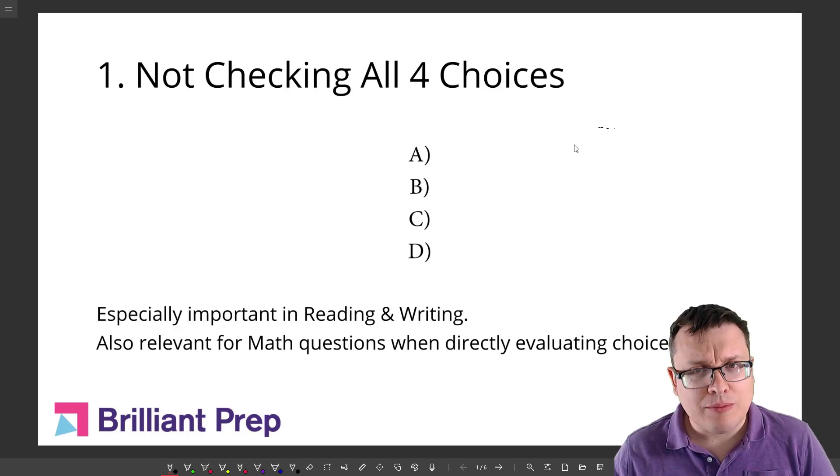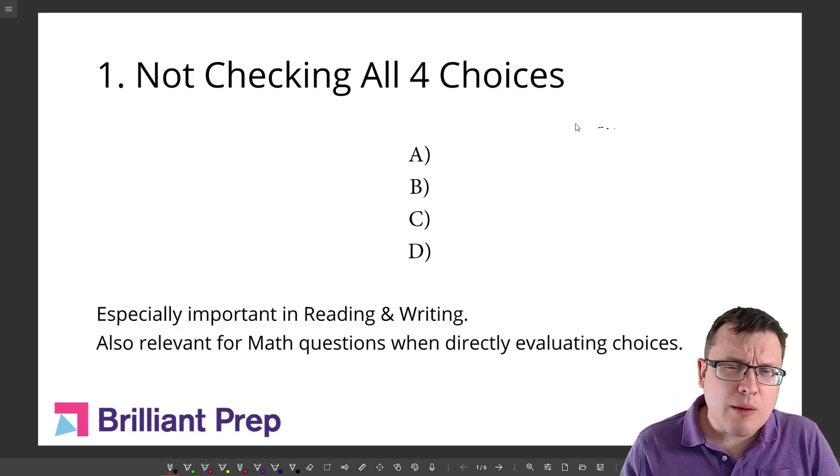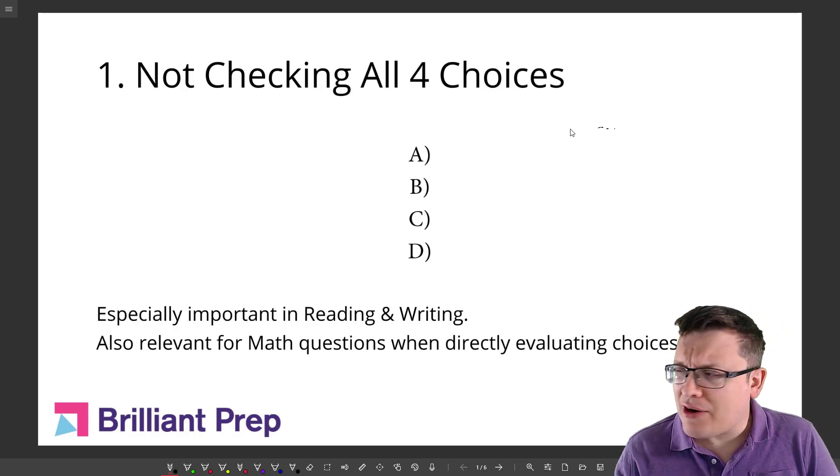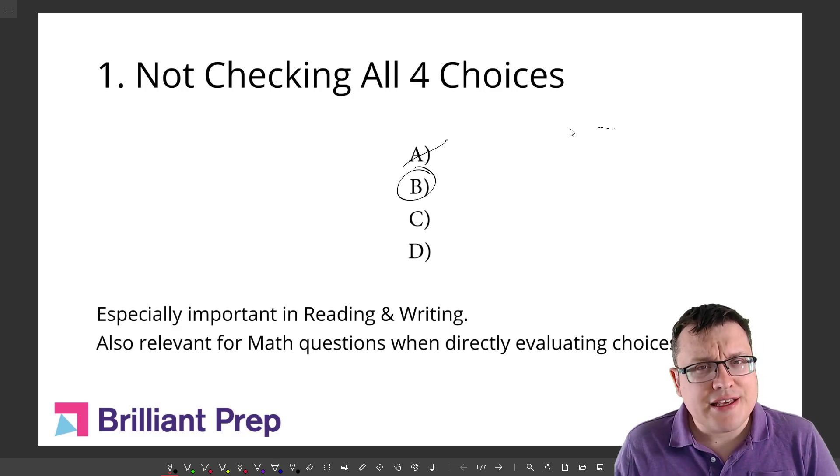It's not a bad idea just to double check the rest of the choices to make sure you haven't missed anything. So let's say I'm working on a question, check out A, it doesn't look so good, and then I look at B and it immediately jumps out to me as the answer. You might be tempted to just circle it or bubble it in and move on,